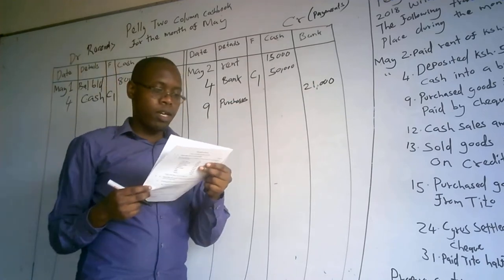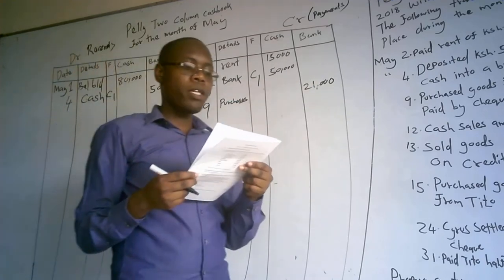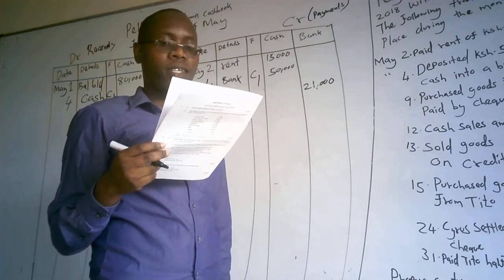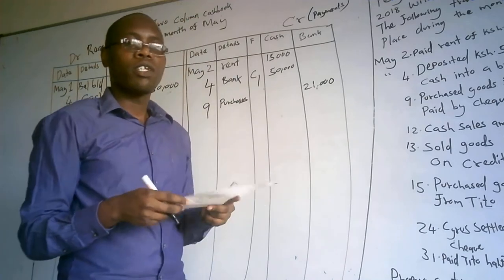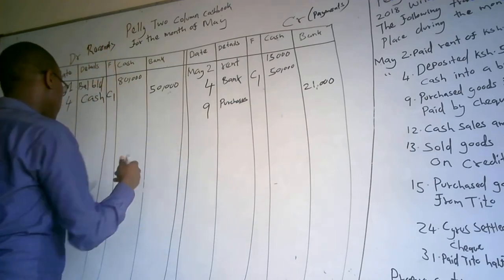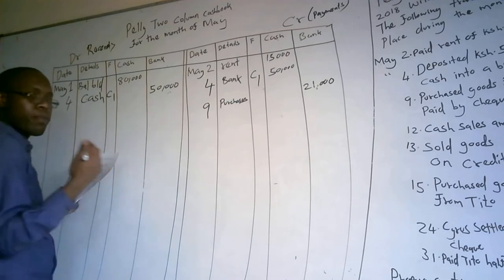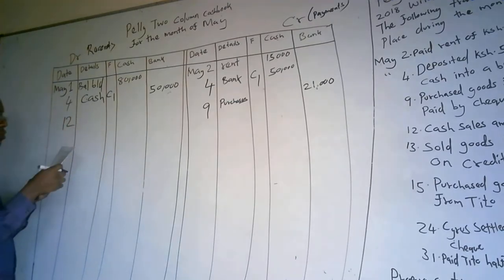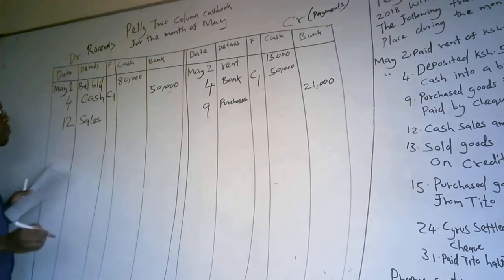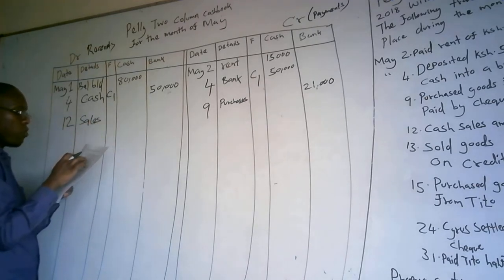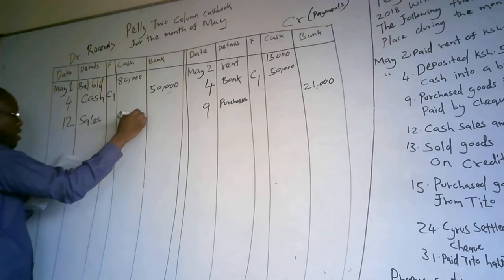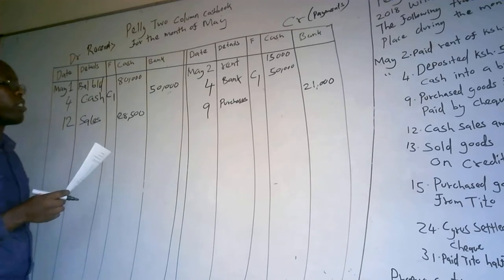May 12: cash sales amounted to $28,500. We made cash sales, meaning cash increased. We debit the cash column because money is coming in. On May 12, under details I write 'sales,' and under the cash column I record the amount of 28,500.